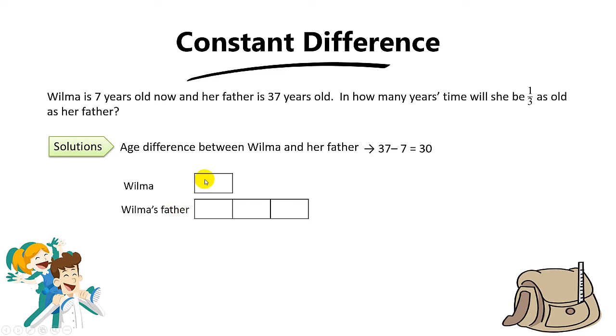One third means that Wilma will be one unit while her father will be three units. And since we know that the difference between them will always be the same, this will be the difference.